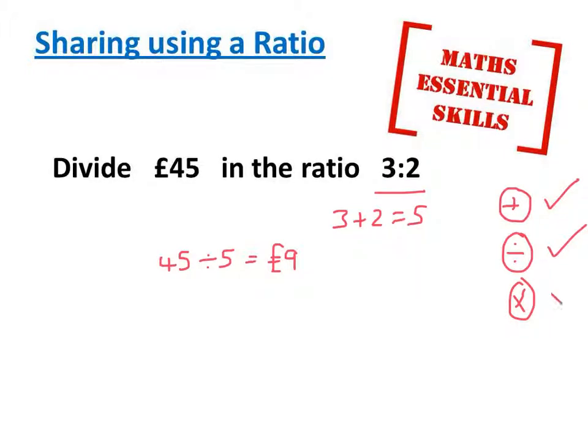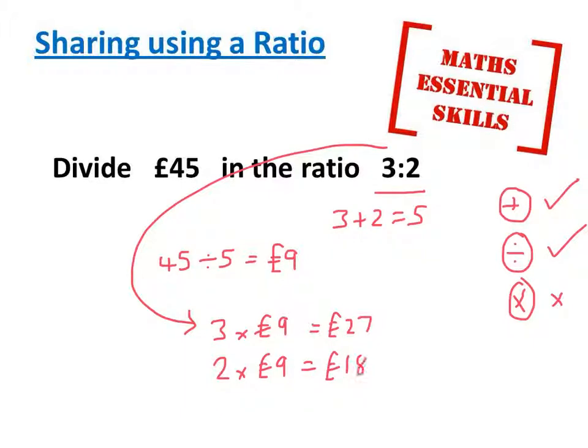Finally we multiply. We've got to do three lots of the £9 for the first part of the ratio which is 27, and then we have to do two lots of the £9 for the second part of the ratio which is worth 18.